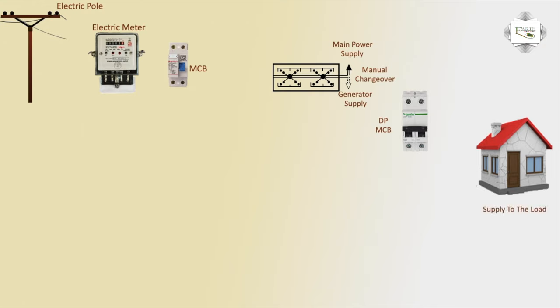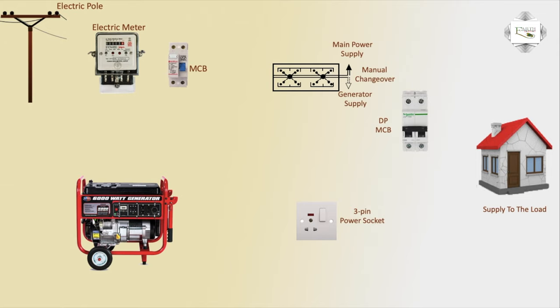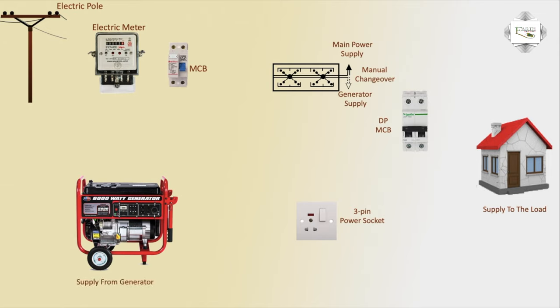Connection: 3-pin power socket to generator line input, generator supply from electric pole. Phase line input to energy meter phase, neutral same connection. Energy meter outlet to DP input — neutral input to DP.